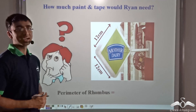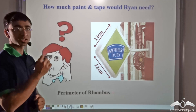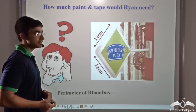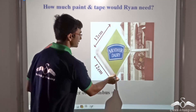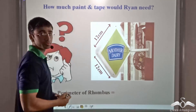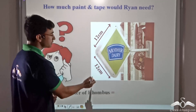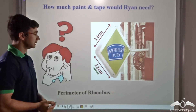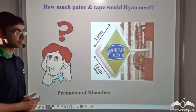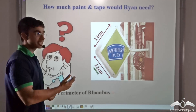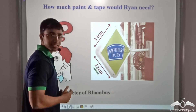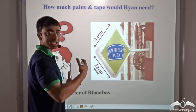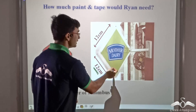Ryan in the picture had a very particular task to accomplish. Over here you can see a Mother Dairy sign. This particular Mother Dairy signboard is in the shape of a rhombus and the side of the rhombus has been given to us as 12 centimeters. Now Ryan had to do two things: firstly he had to make ten more signboards like this, and in order to make these signboards, Ryan had to know the amount of paint he would need.